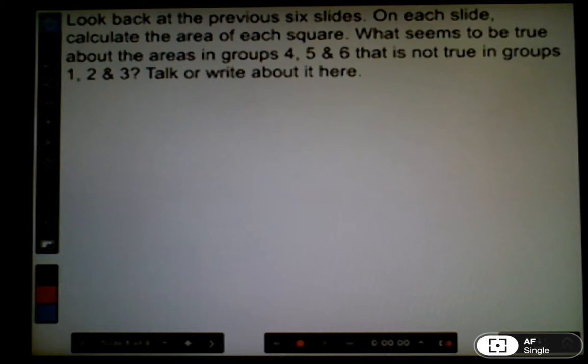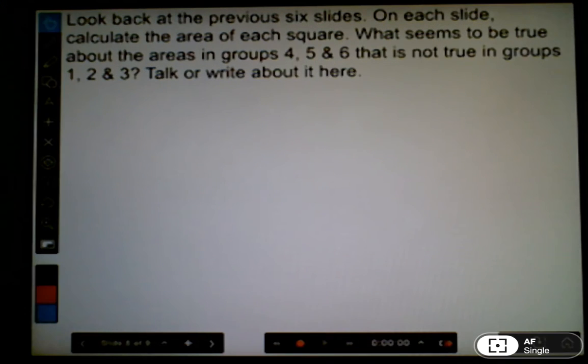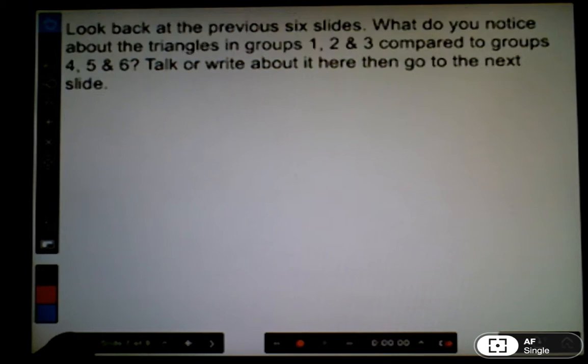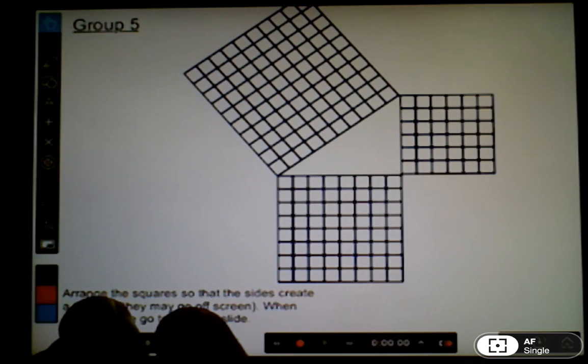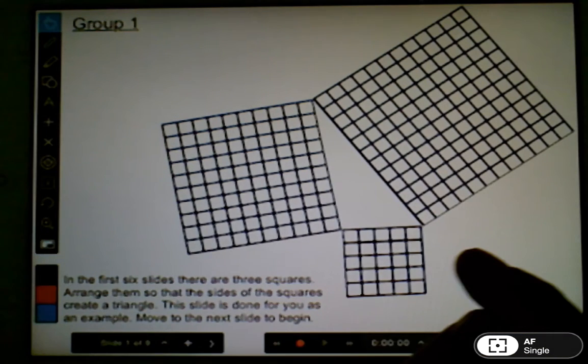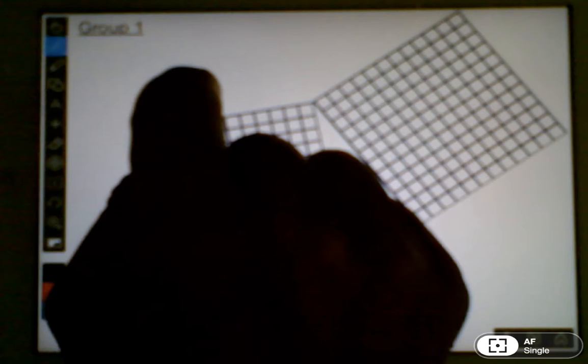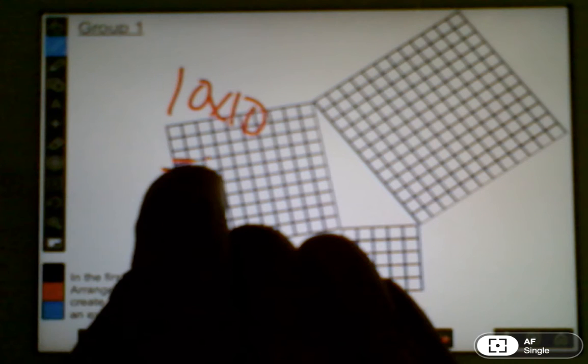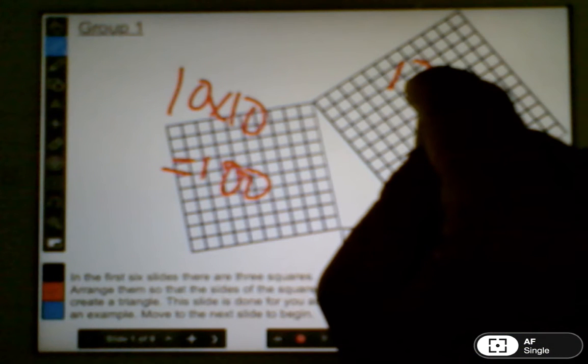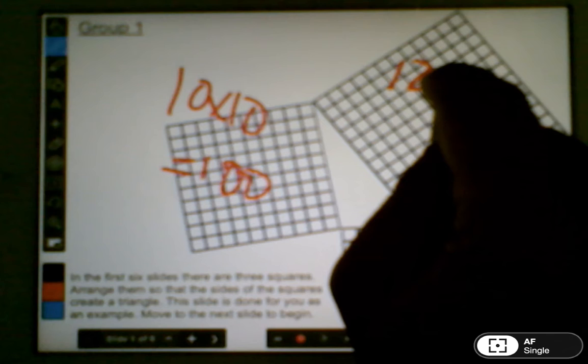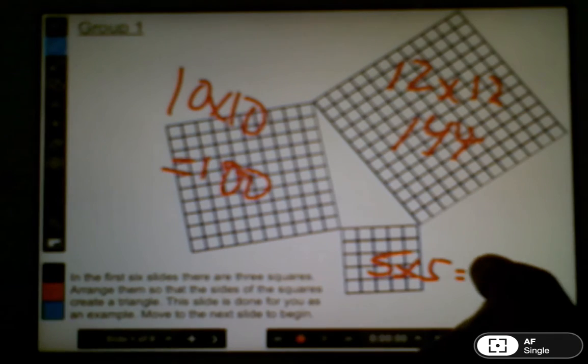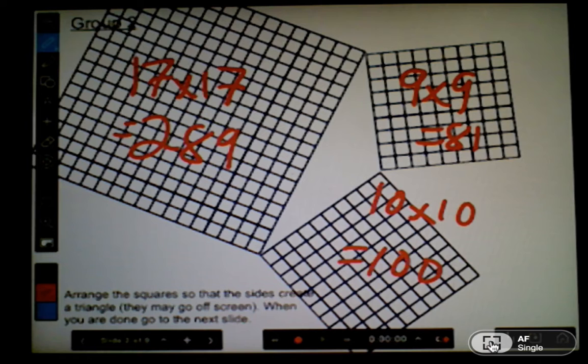The next thing that we have them do is really the connection to Pythagorean theorem. We want them to calculate the area of each square in each of the slides. When they go back to the first one, they're going to calculate the area, whether they just count squares or recognize this is 10 by 10 or 100, this is 12 by 12 or 144, and this one's 5 by 5 or 25. You do that for each of the sets of triangles.